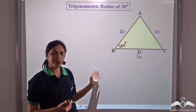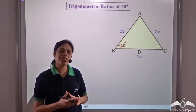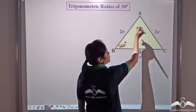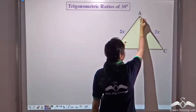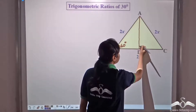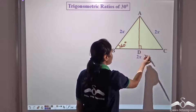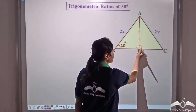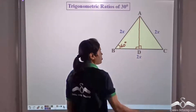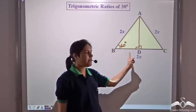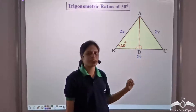For a right angle triangle, we need a 90 degree. So we drop a perpendicular line from A to BC, giving us AD perpendicular to BC.